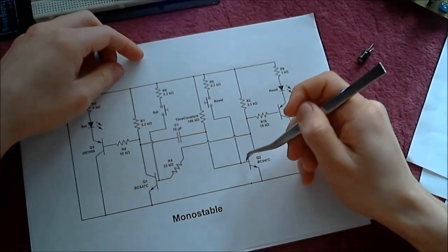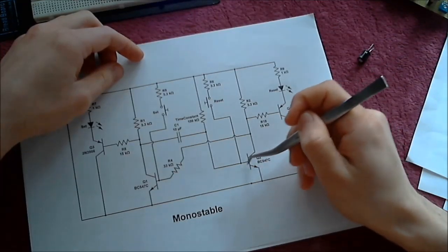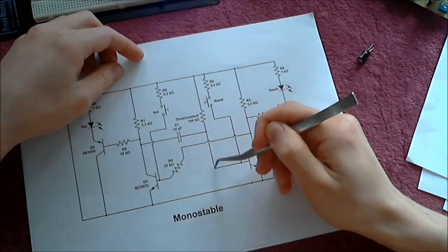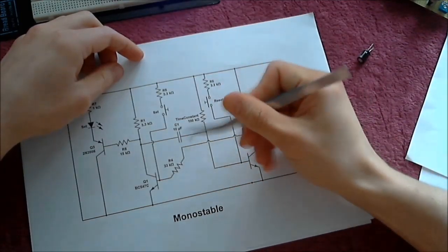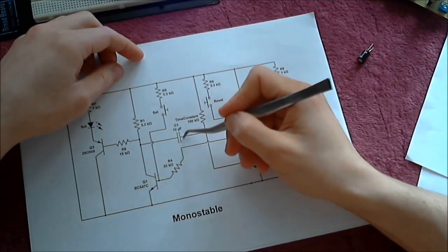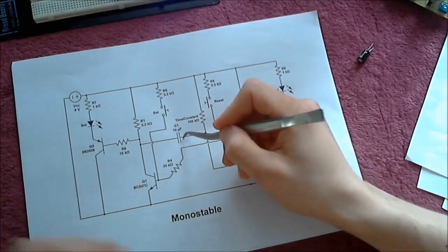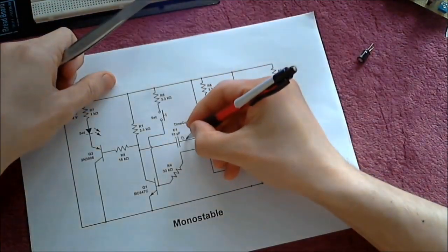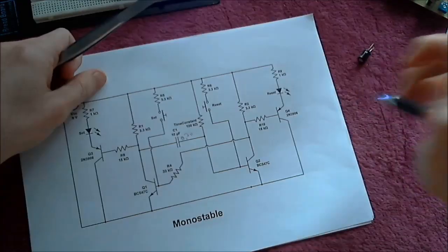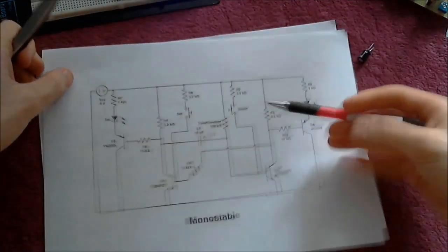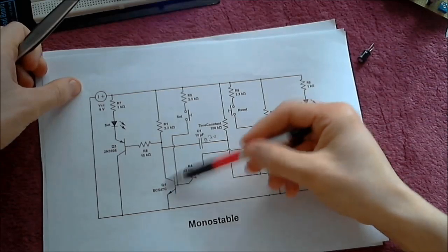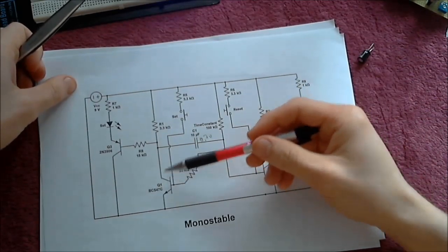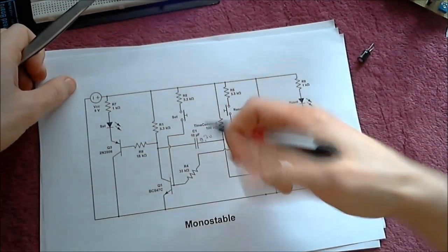Since this is a forward diode drop, then this part is going to be at 0.7 volts. So this side of the capacitor is going to be at 0.7 volts. This collector, this transistor is going to be off, so the collector is going to be high.